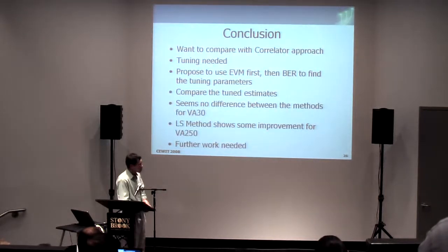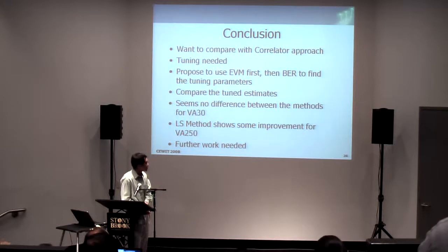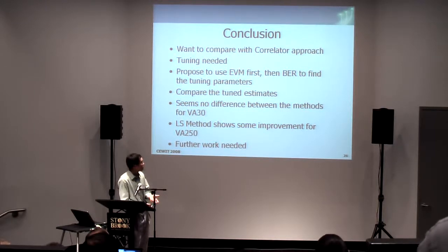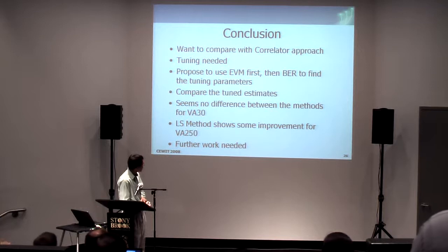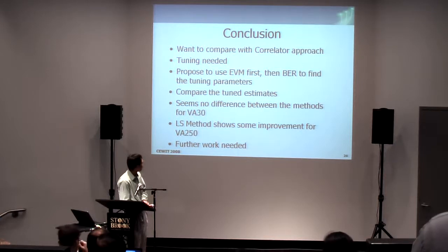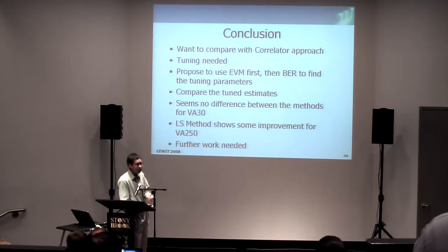So in conclusion, we wanted to compare some newly developed channel estimation methods with this existing, popular correlator-based approach. We realized that we needed to tune the estimates before we could compare them, to tune the estimates resulting from these different methods. So we have a certain proposal, a certain comparison methodology, to use EVM first, relatively efficient, and then bit error rate to find the tuned parameters, and then apply the tuned parameters to our channel estimates. We then use these tuned channel estimates to find the better approach. We find little difference between the methods for the slower-varying channel, but for the faster-varying channel, the faster mobile, we find that the least squares and Kalman do show some improvement over the correlator-based approach.